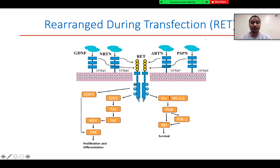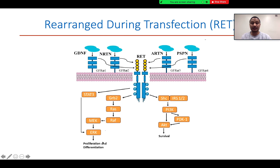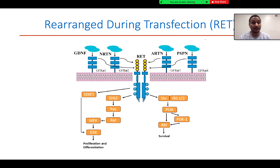Upon phosphorylation of the tyrosine kinase residues in the intracellular domain, there are two main pathways it dictates. One is the MAP kinase signaling pathway through ERK, which results in cell proliferation and differentiation. The other is the PI3 kinase AKT pathway, which helps in cell survival.